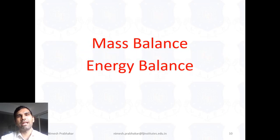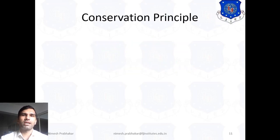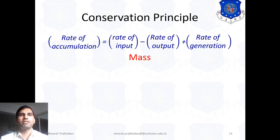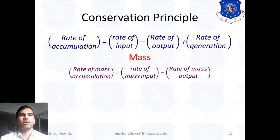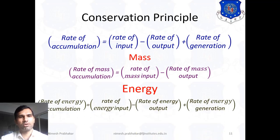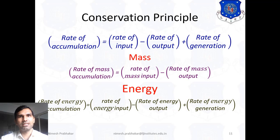Now we discuss mass balance and energy balance. The general conservation principle equation is: rate of accumulation equals rate of input minus rate of output plus rate of generation. For mass conservation, rate of mass accumulation equals rate of mass input minus rate of mass output — the rate of generation is not considered here. For energy conservation, rate of energy accumulation equals rate of energy input minus rate of energy output plus rate of energy generation.